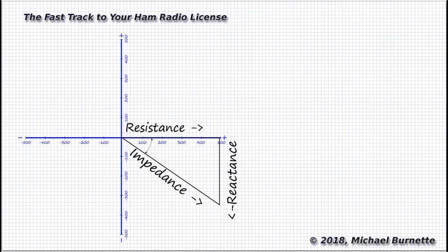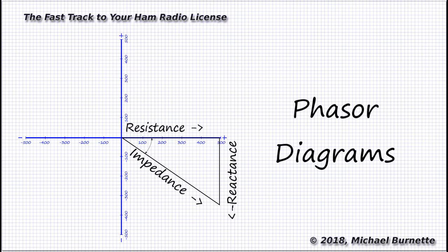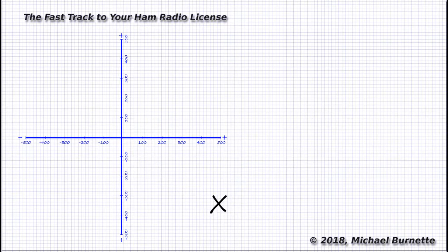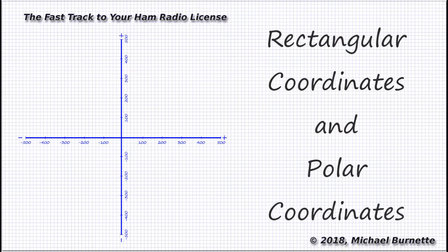Those diagrams have a technical name that's used on the extra exam. They're called phasor diagrams. Notice that in both these phasor diagram examples, we're really just identifying one point on a graph, which is the point where the impedance and reactance lines meet. We could specify that point in a couple of ways, and it turns out that each different way comes in handy in different situations. That's what the exam is talking about when it asks about rectangular coordinates and polar coordinates.